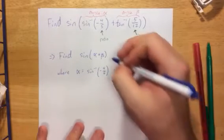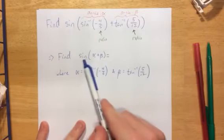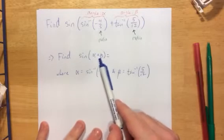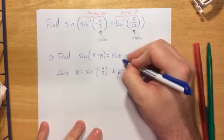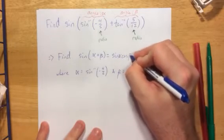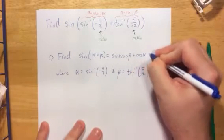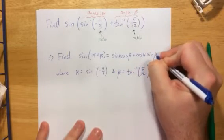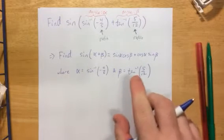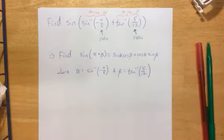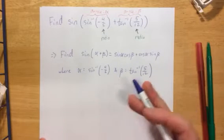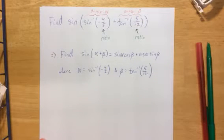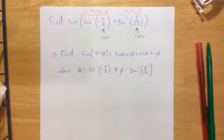Now before we proceed any further, the reason that I wanted to write it in this form is because sine of alpha plus beta now looks like one of our sum identities that we've been learning recently. So this is sine of alpha cosine of beta plus cosine alpha sine of beta. Now I don't really care that much about what alpha and beta are, like as far as a degree measure or a radian measure or whatever. The only thing I'm really concerned about is what is the sine and the cosine of each of these angles. If we can figure out those pieces of information, we are solid.